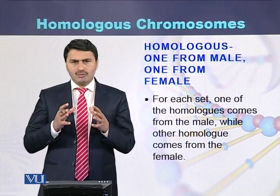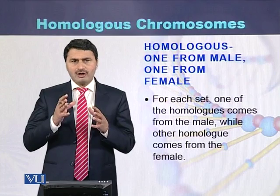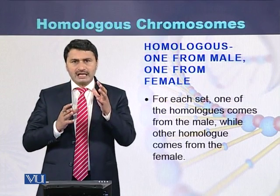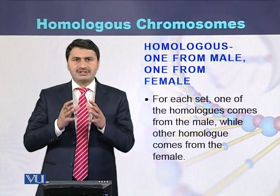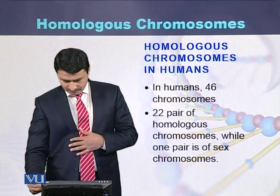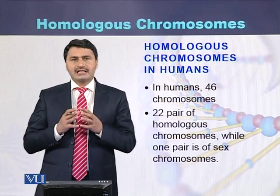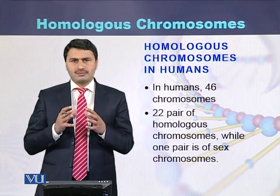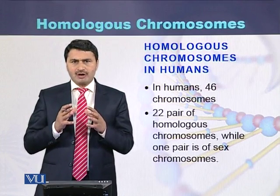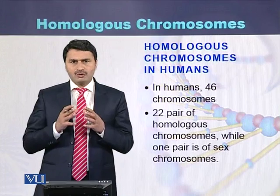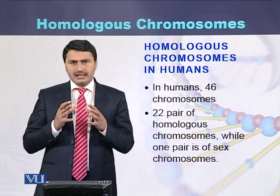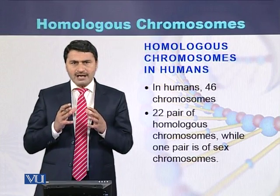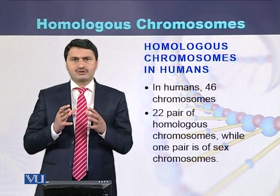For each pair of homologous chromosomes, one homolog comes from the male side while the other comes from the female side. In humans, there are 46 chromosomes arranged as 23 pairs. Out of these 23 pairs, 22 are pairs of homologous chromosomes and one pair consists of sex chromosomes.